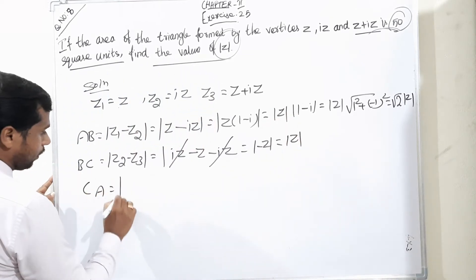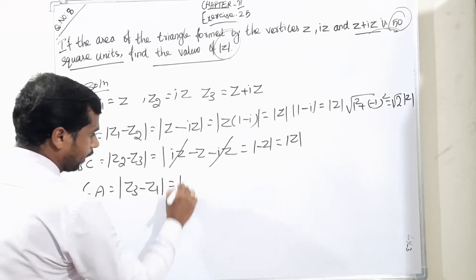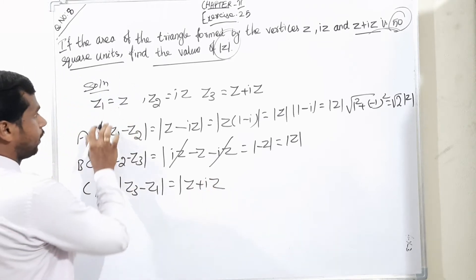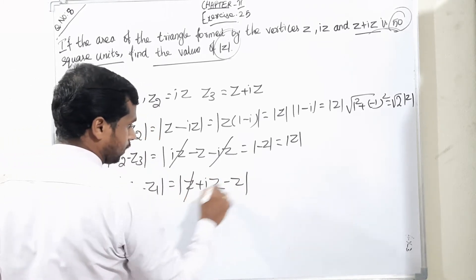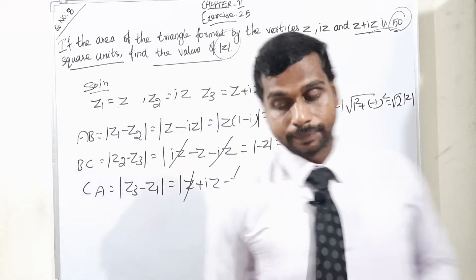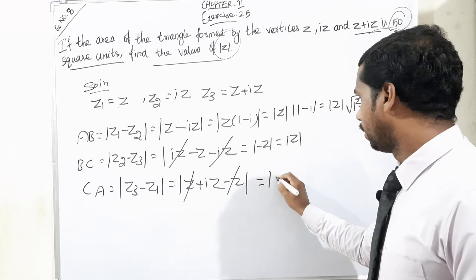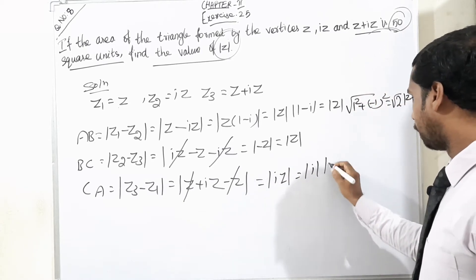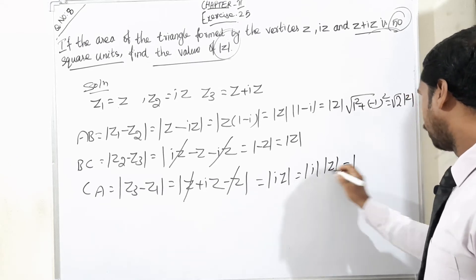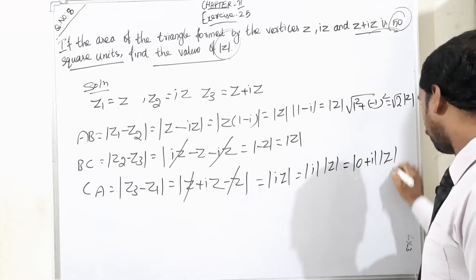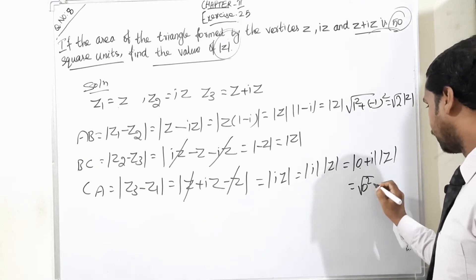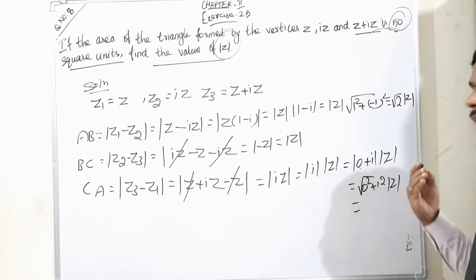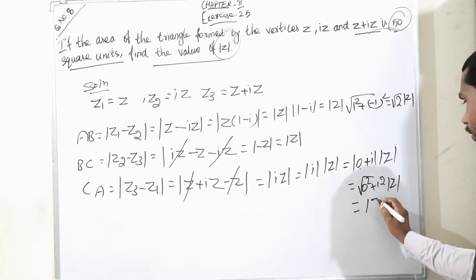CA is equal to modulus of Z3 minus Z1, which is modulus of Z plus iZ minus Z. The plus Z and minus Z cancel, leaving modulus of iZ. Separating the imaginary term gives 0 plus i into mod Z, so modulus is square root of 0 squared plus 1 squared into mod Z, which equals mod Z.